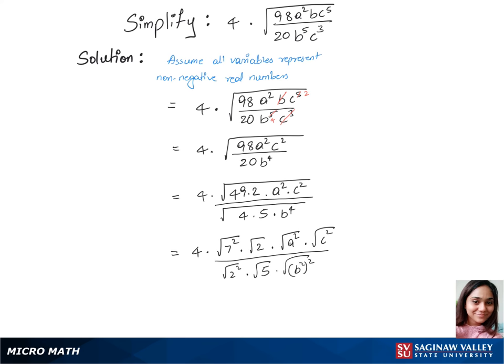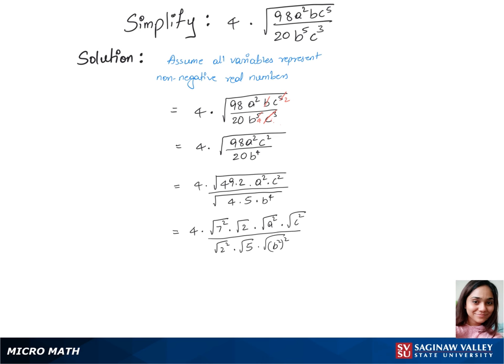Now we have 4 times, will strike out square root, so we are left with 7 times root 2 times, since it's a variable we'll put that under modulus of a times modulus of c, over 2 times root 5, times we'll put this under modulus, so that's modulus of b².